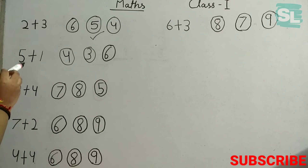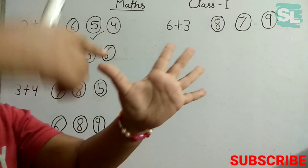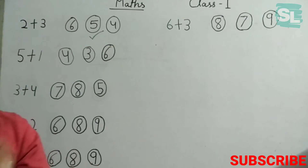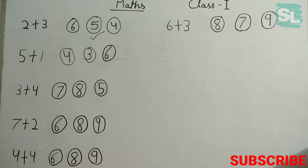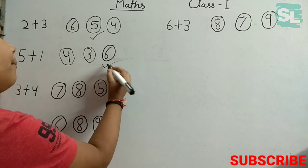5 plus 1. Let's count 5 plus 1. We have 5 toys, and someone gave us 1 toy more. So we have 5 and count to 6. It will be 6. Our answer is 6.